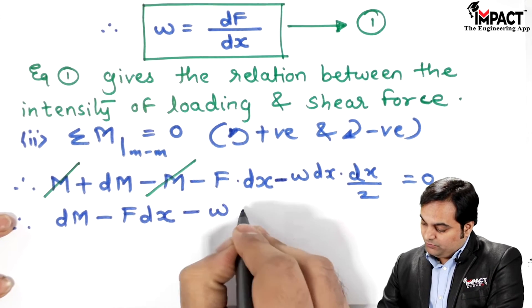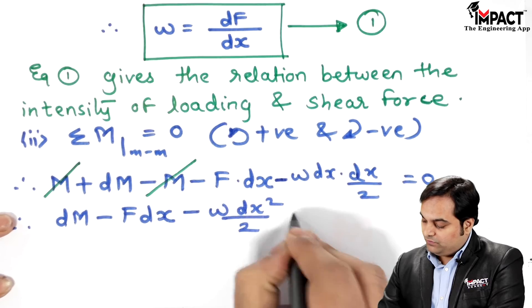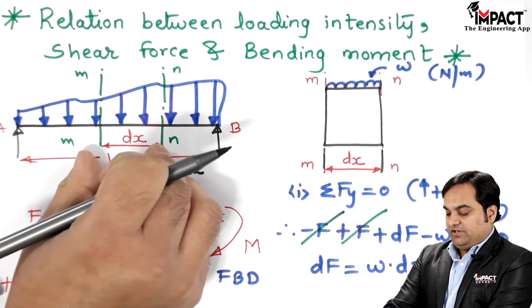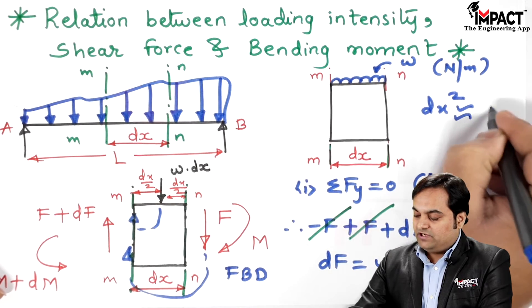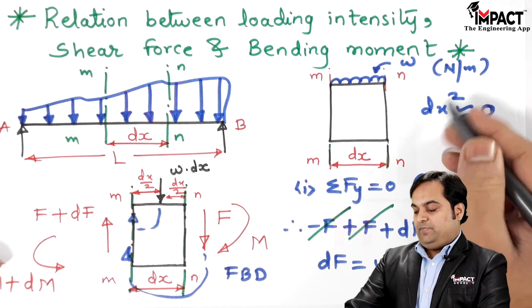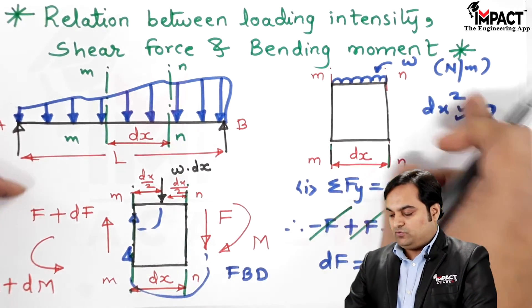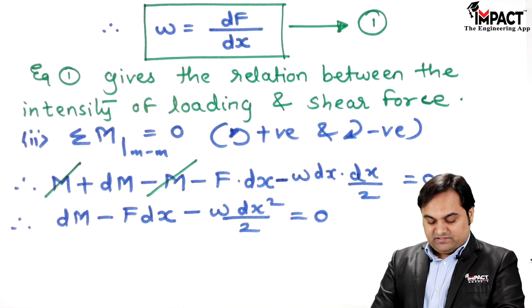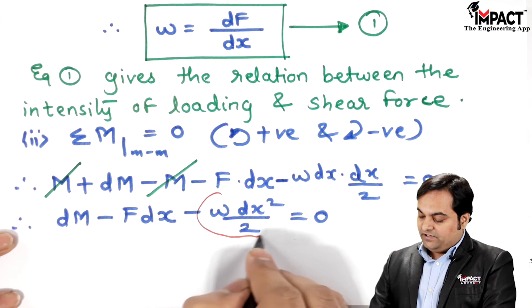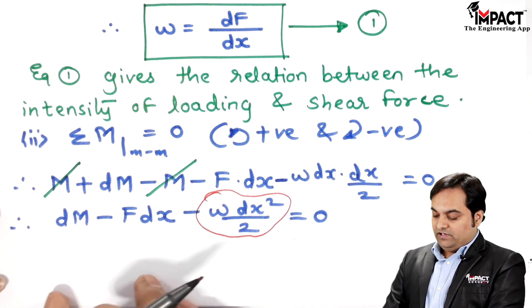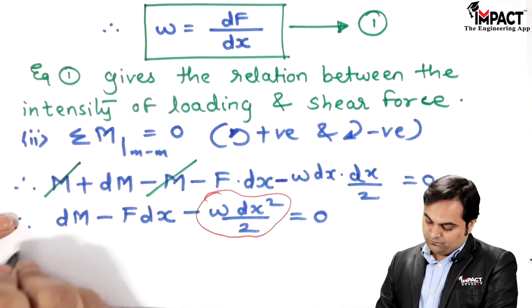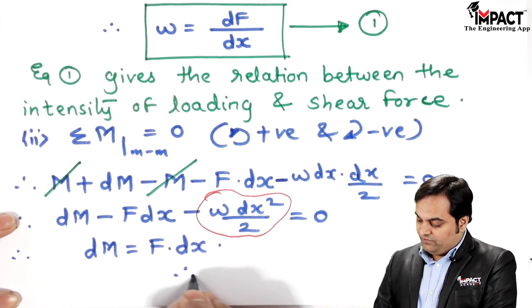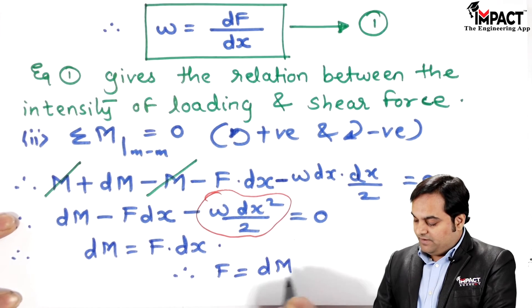Simplifying: M and −M cancel, giving dM − F·DX − w·DX²/2 = 0. Since DX is a very small elemental length, DX² is negligibly small and is taken as zero. Therefore the term w·DX²/2 is neglected, leaving dM − F·DX = 0, which gives F = dM/DX. This is Equation 2.